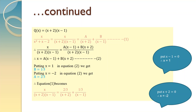Since the denominator is of the linear non-repeated type, we will split the fraction as a upon x plus 2 plus b upon x minus 1. Because there were two factors, we split it into two fractions, and since both the factors were linear, we will use constants a and b as the numerator, giving us equation 1. Now we will do the cross multiplication. The left hand side is x upon x plus 2 into x minus 1, and on the right hand side we get a into x minus 1 plus b into x plus 2 upon x plus 2 into x minus 1. The denominators on both sides are the same, so they get cancelled, and equation 2 becomes x equal to a into x minus 1 plus b into x plus 2.